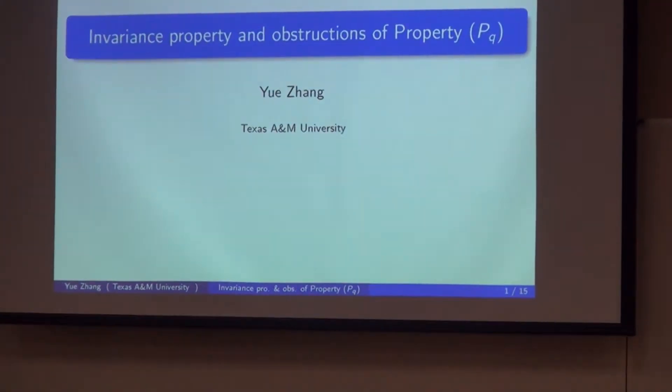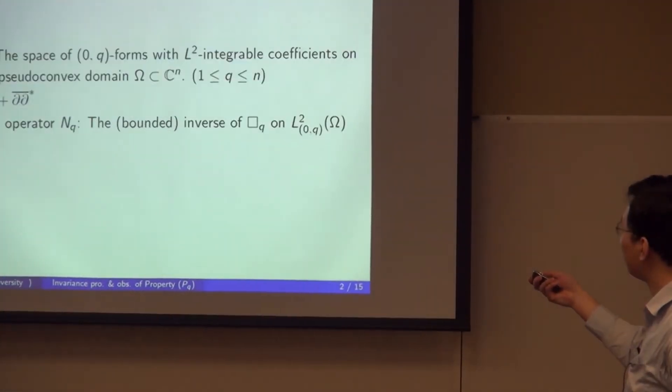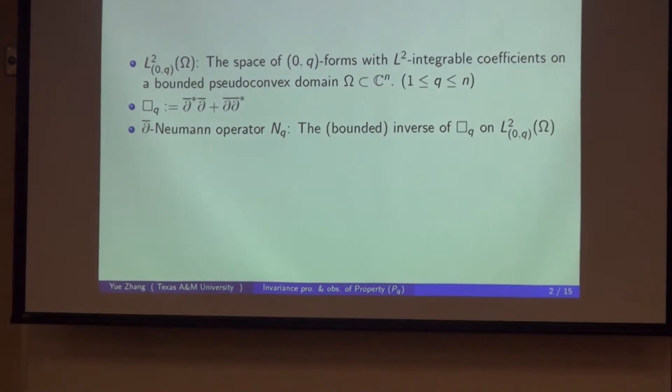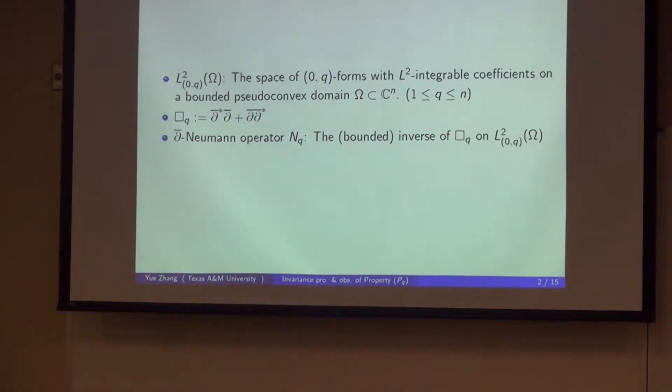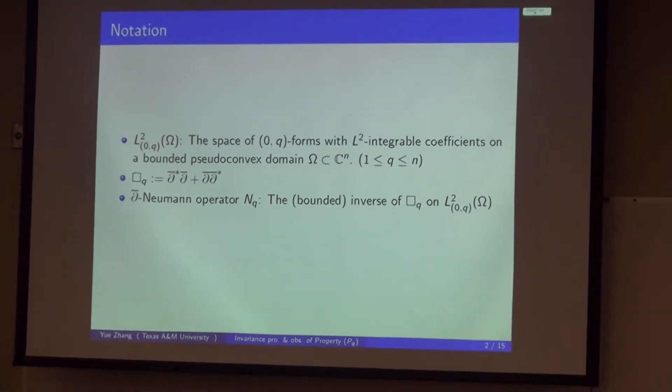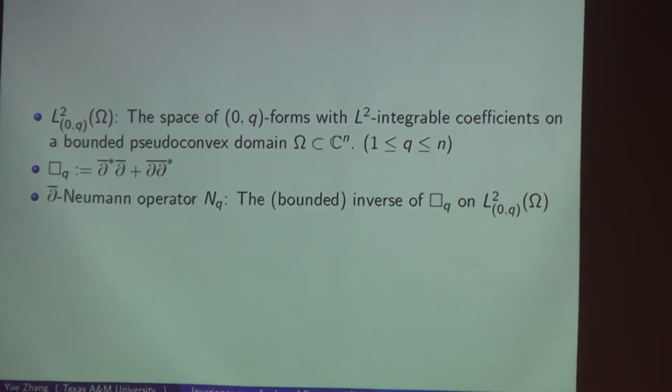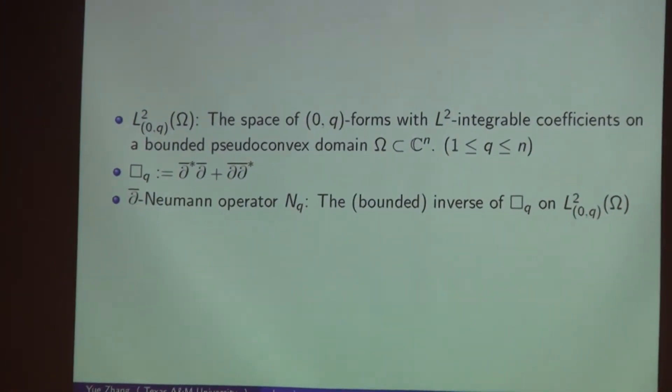The first part of the talk is concentrated on invariance property, and the second part is focused on obstructions of property P_Q. Some quick notations and background: L²_{0,q} denotes the space of (0,q)-forms with L² integrable coefficients on a bounded pseudoconvex domain omega in C^n, and q is between 1 and n. The box_q operator is defined to be d-bar star d-bar plus d-bar d-bar star, and the d-bar Neumann operator N_q is the bounded inverse of the box_q operator on the L² forms.